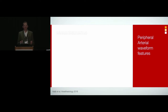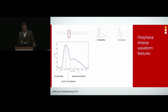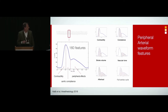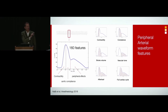Why use an arterial waveform to predict hypotension? It measures blood pressure, but it is a really rich source of data. Each individual arterial waveform gives us a huge amount of information. We can look at systolic rise time to assess contractility, systolic decay time for large vessel compliance, measure heart rate, and infer stroke volume. From each individual waveform, you can extract around about 160 different physiological features.